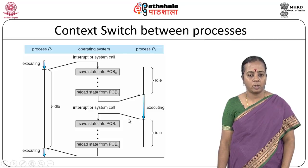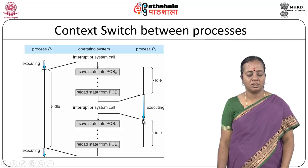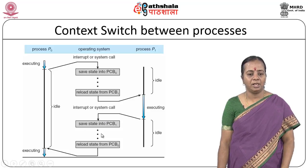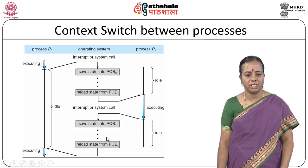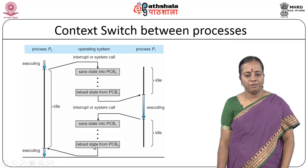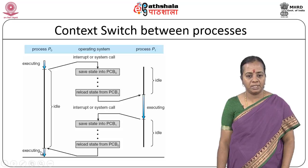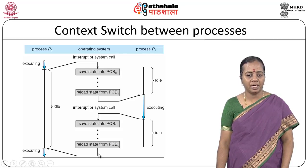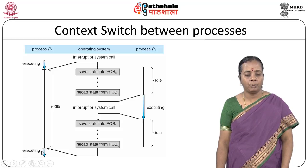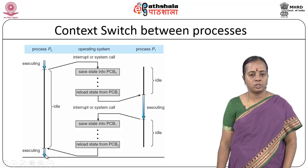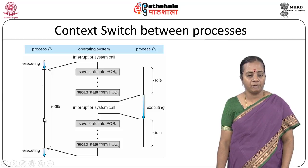Once process 1's time is over, the scheduler says time is over and the status of process 1 is saved in PCB1. Then maybe many processes P1, P2, P3 are given their own time slots. When the slot for task 0 comes again, whatever content was stored in PCB0 is reloaded and the CPU is scheduled for processing process 0. This is the way context switching is used so that all processes are scheduled in different time slots.